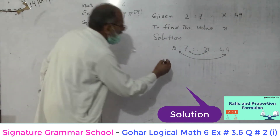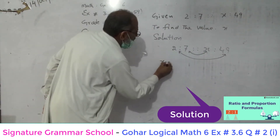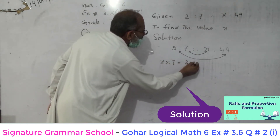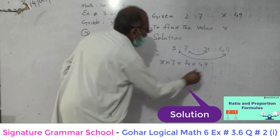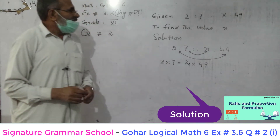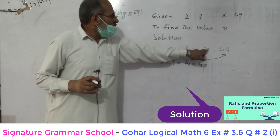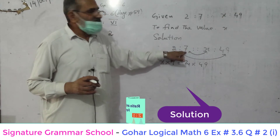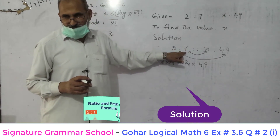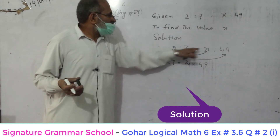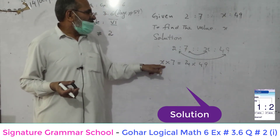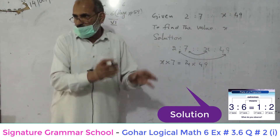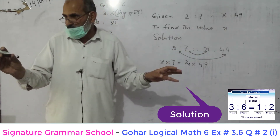So x is multiplying with 7, and this is equal to 2 multiplying with 49. As I told you in Urdu: x is wasteng and 7 is wasteng — they are in the middle. So x is multiplying with 7. And 2 is multiplying with 49, because 2 and 49 are at extremes.